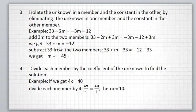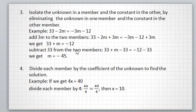We get 33 plus m equal to minus 12. Then subtract 33 from both members to remove 33 from the left member. We get 33 plus m minus 33 equal to minus 12 minus 33, then m equal to minus 45.